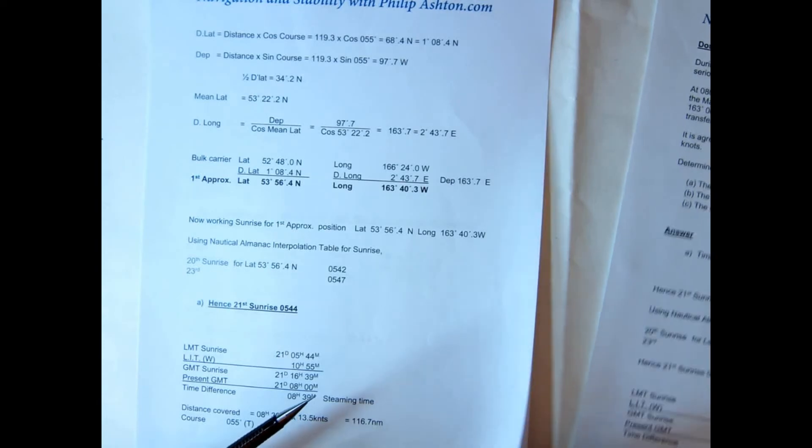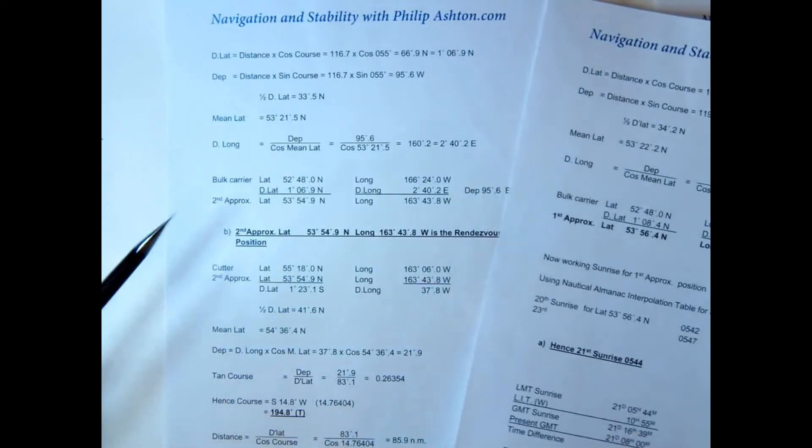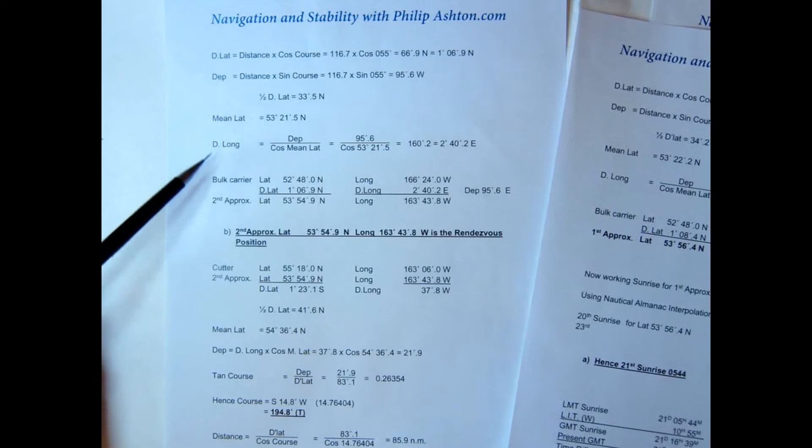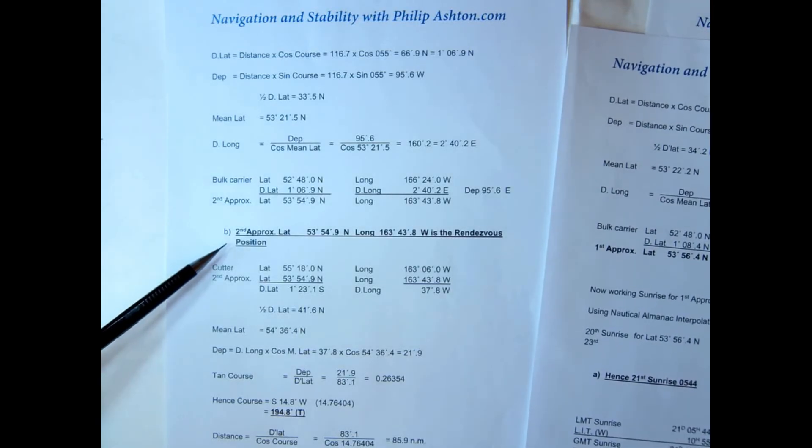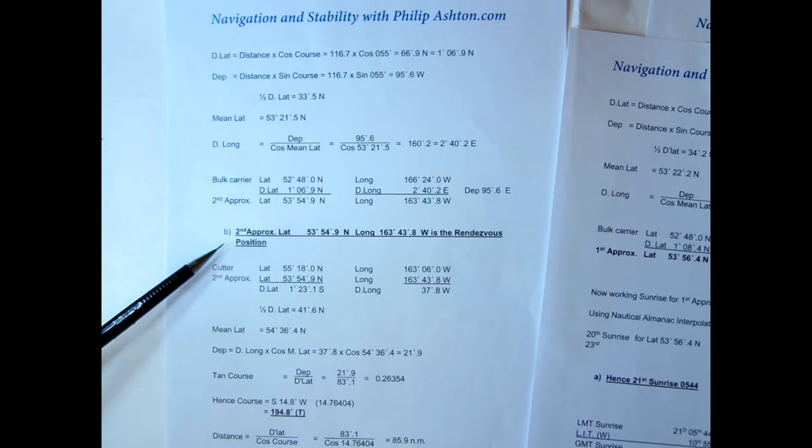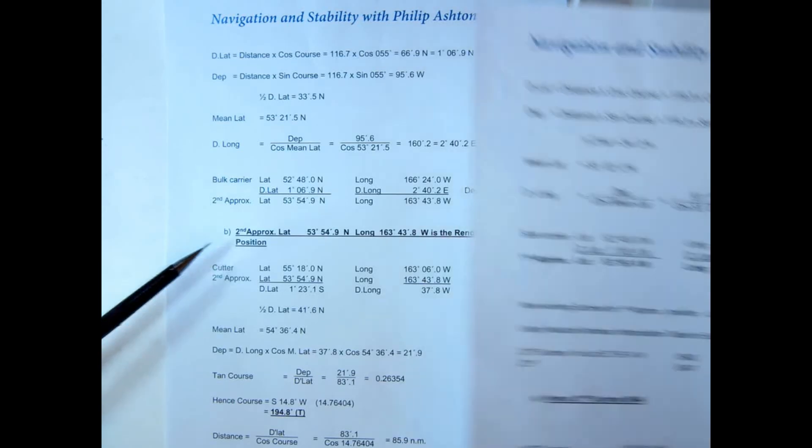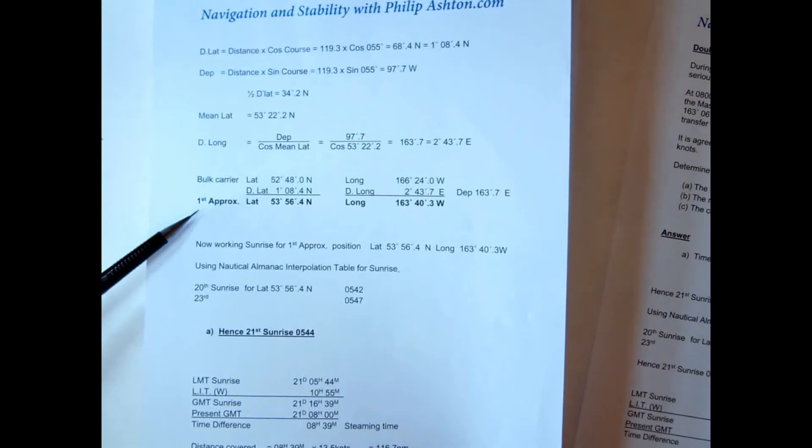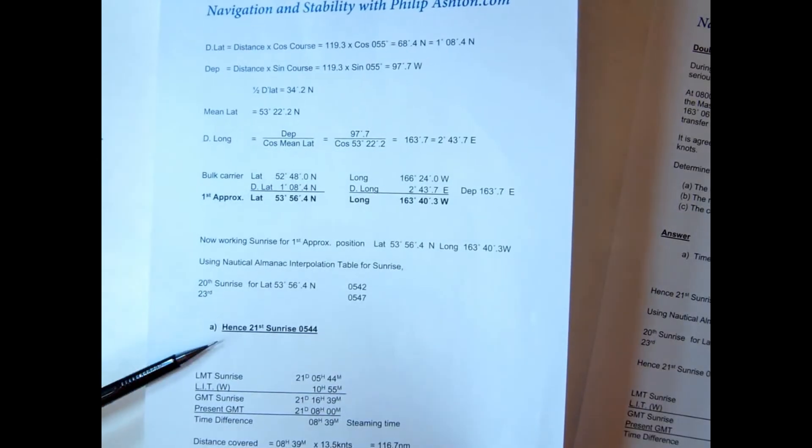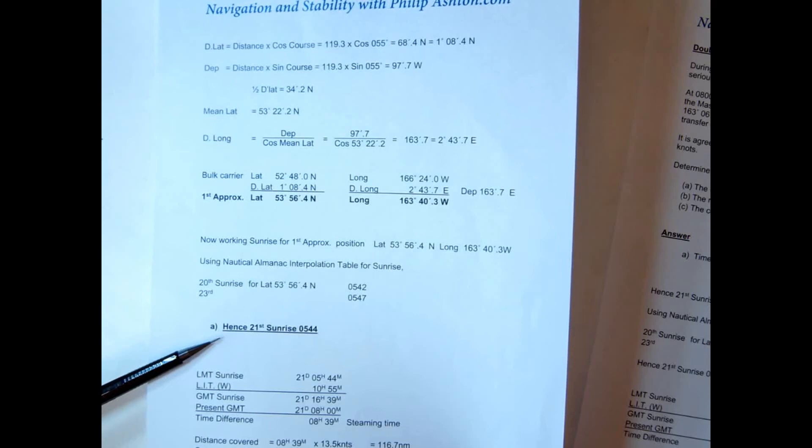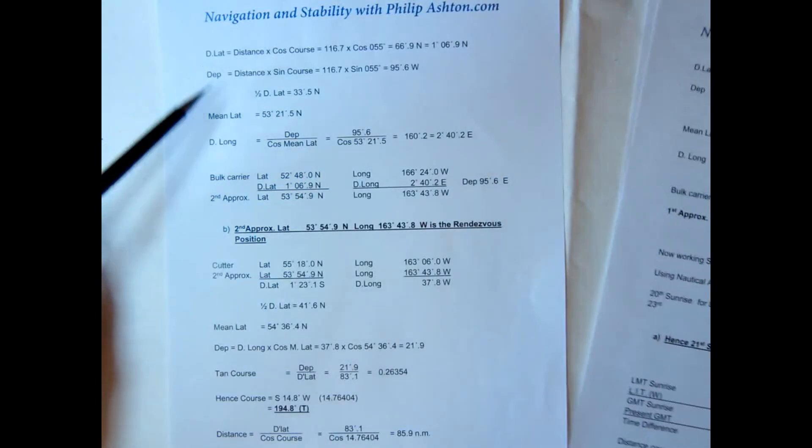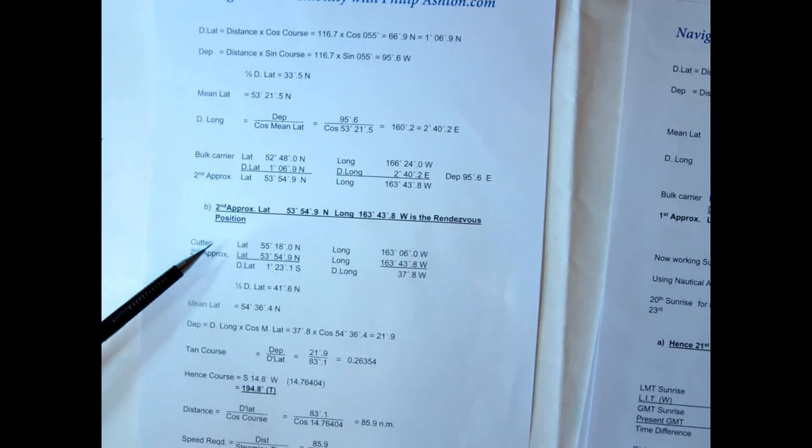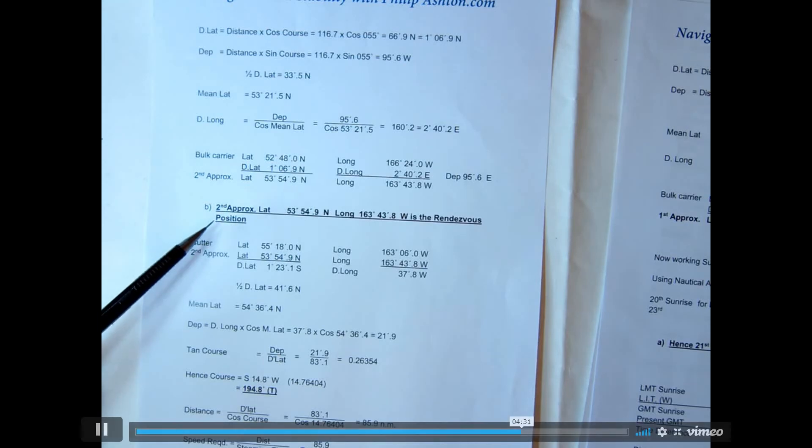So again, usual plane sailing. Follow through as I've done there, you could have done by Mercator, and we get our second approximate position which is the rendezvous position. So at this point when we've looked up using the first approximate position, we've actually got the sunrise time there, 0544. We've now worked out the steaming time, carried that forward, and worked out the second approximate position. So that's the rendezvous position.